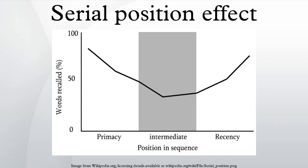Another type of model is based on contextual variability, which postulates that retrieval of items from memory is cued not only based on one's mental representation of the study item itself, but also of the study context. Since context varies and increasingly changes with time, on an immediate free recall test, when memory items compete for retrieval, more recently studied items will have more similar encoding contexts to the test context, and are more likely to be recalled.